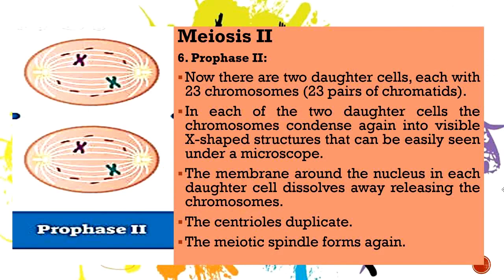We are now done with the stages of meiosis 1 and move on to meiosis 2. In prophase 2, there are now two daughter cells, each with 23 chromosomes and 23 pairs of chromatids. In each daughter cell, the chromosomes condense again into visible X-shaped structures. The membrane around the nucleus in each daughter cell dissolves away, releasing the chromosomes. The centrioles duplicate and the meiotic spindle forms again.